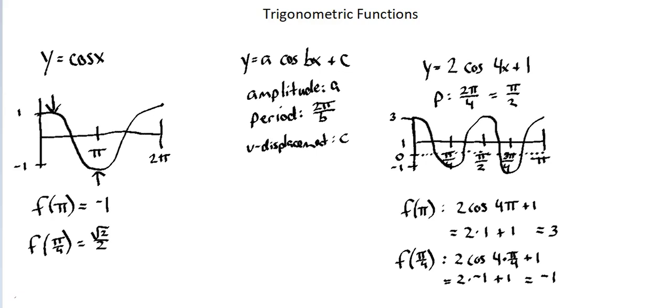I'll indicate these inputs and outputs on the graph in red. The input value of π on the x-axis results in an output value of y equals 3 on the curve. An input value of π over 4 on the x-axis results in an output value of y equals negative 1 on the curve.